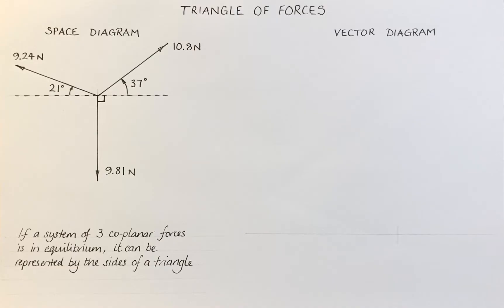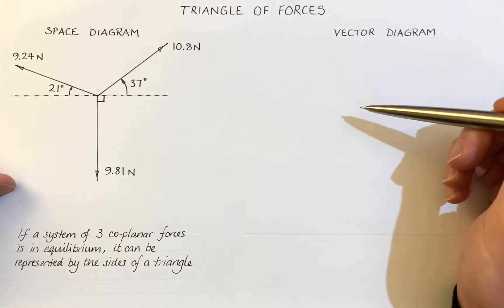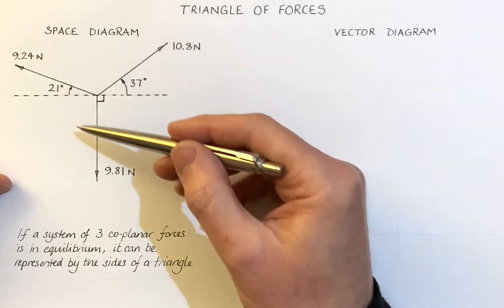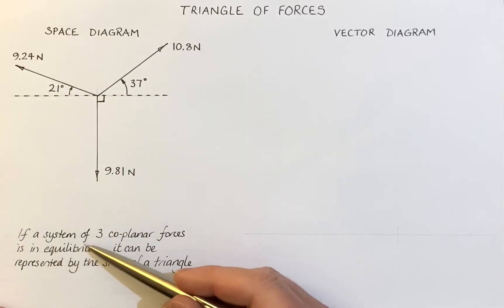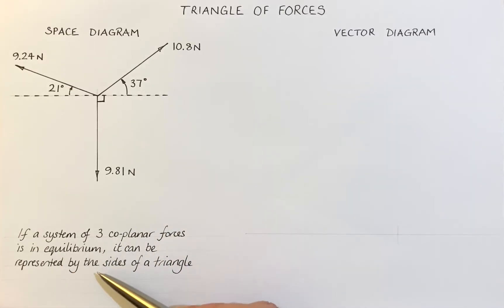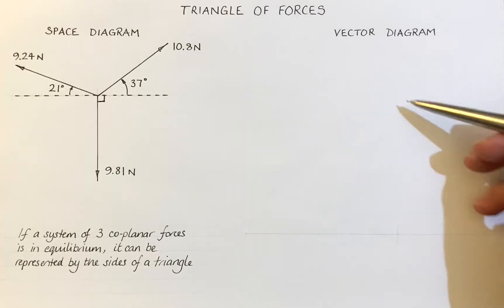Hi, this is a short video to show you how to draw a triangle of forces vector diagram. A triangle of forces vector diagram is a representation of a system of forces. And if a system of forces and their coplanar forces are in equilibrium, the system can be represented by the sides of a triangle. And that's what we're going to do over here.